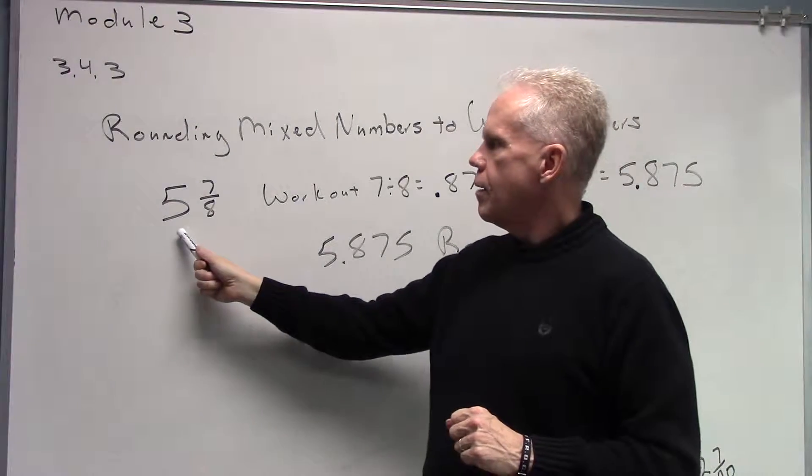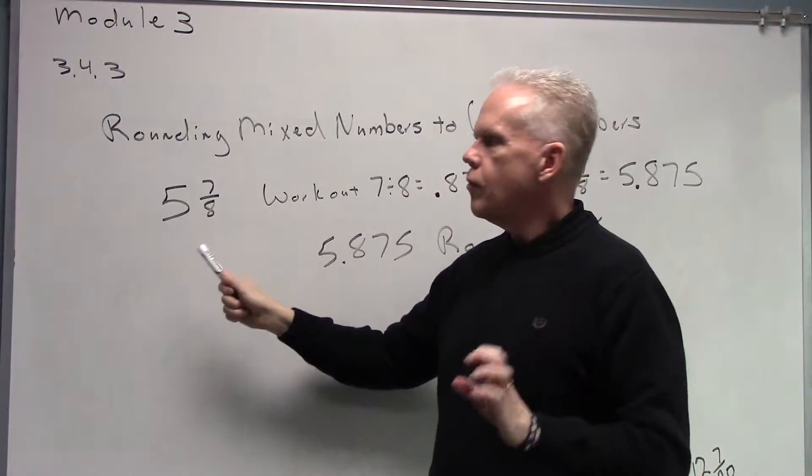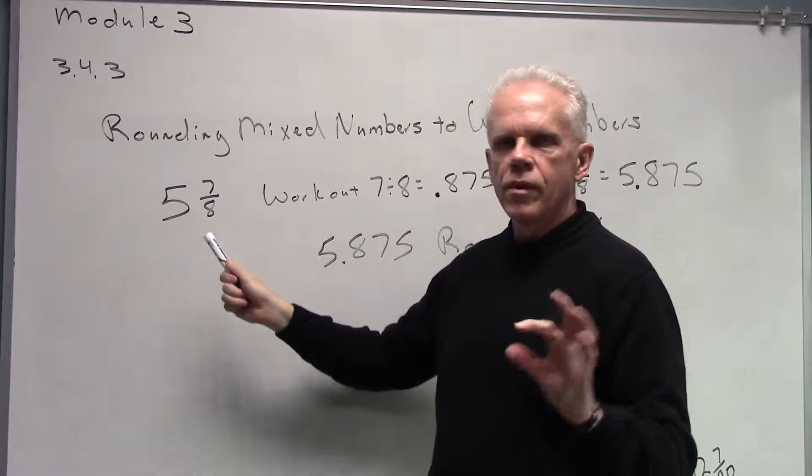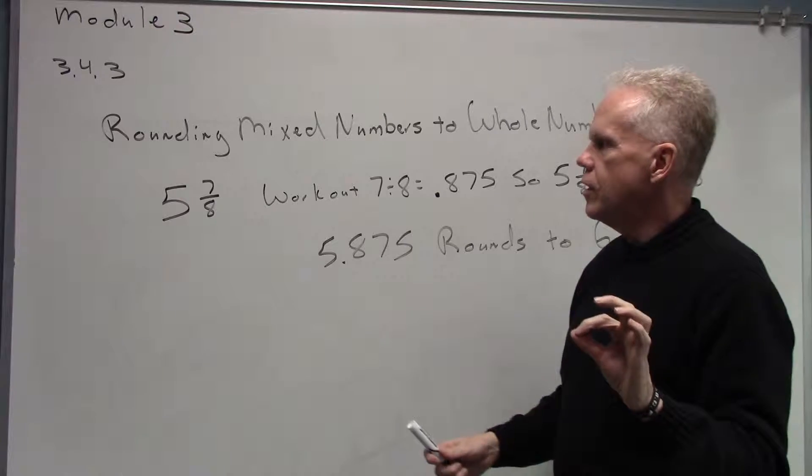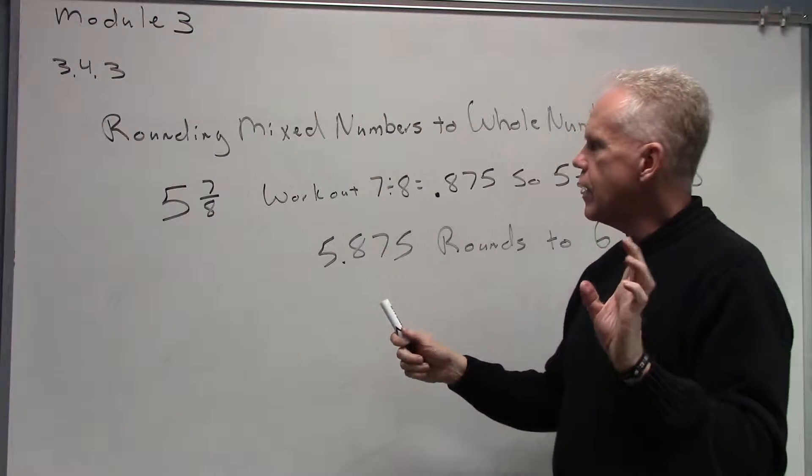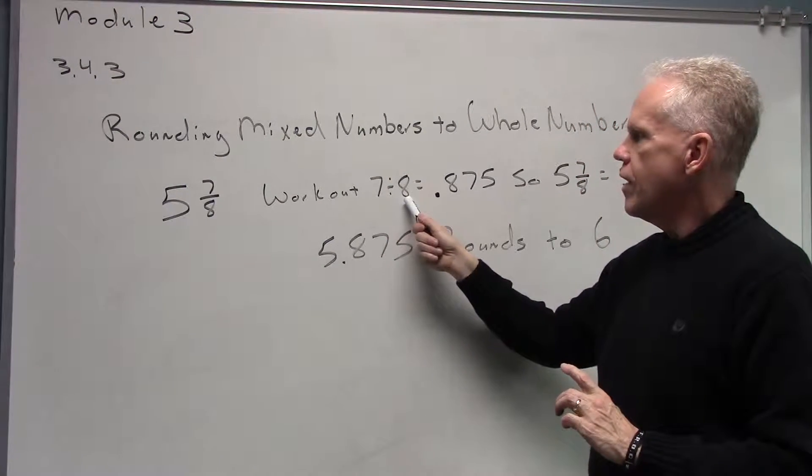Let's take for example 5 and 7 eighths. If I wanted to round off 5 and 7 eighths to a whole number, there are several ways to do this. But one, this may be the simplest for you to deal with,